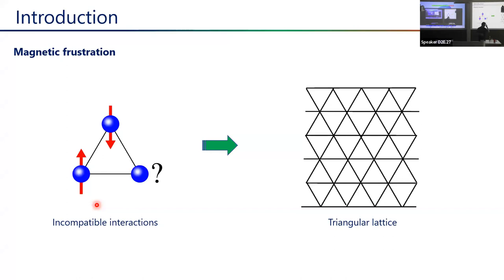Most of you have already heard this introduction to frustrated magnetism many times, so I can go fast — please interrupt if I'm too fast. The idea is: if you have incompatible interactions, like antiferromagnetically coupled Ising spins on a triangle, you cannot satisfy all the bonds at once — that's called frustration. What happens if you take many of these triangles and form a two-dimensional lattice?